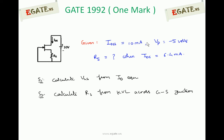So first calculate VGS from ID equation. Calculate VGS from drain current equation of JFET. Next calculate RS from the KVL across gate source junction. If you apply KVL across this one, you can calculate the RS value.